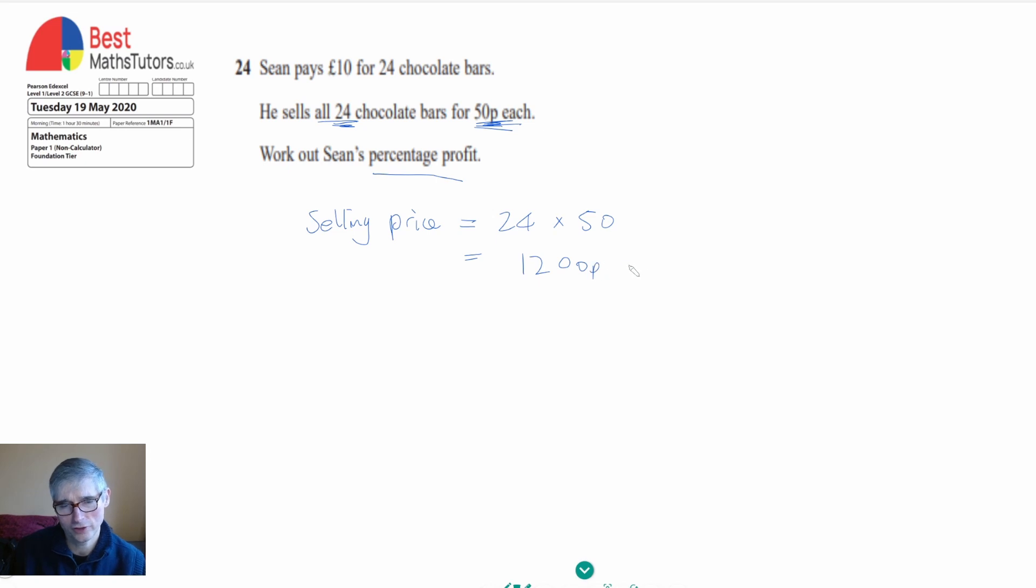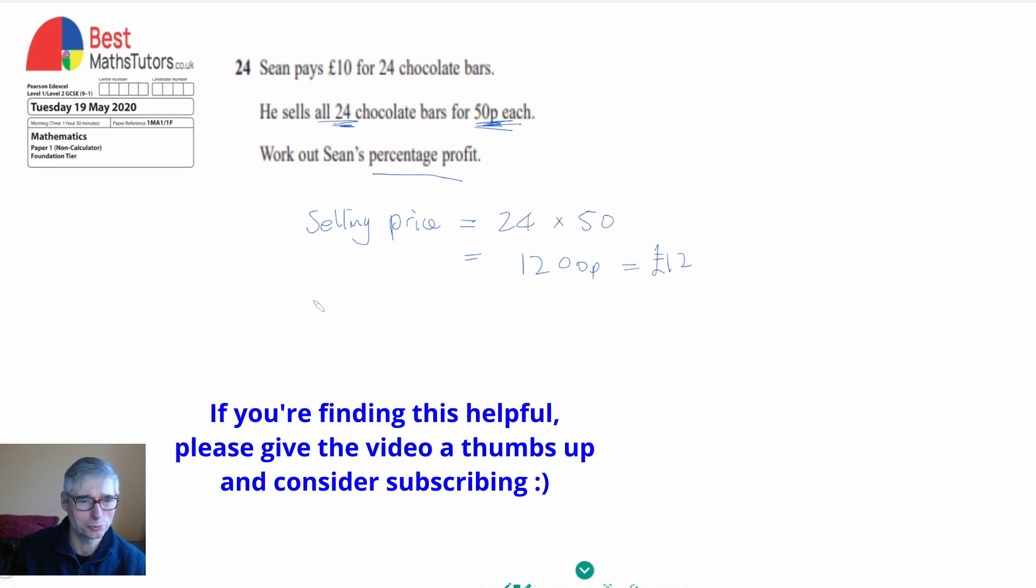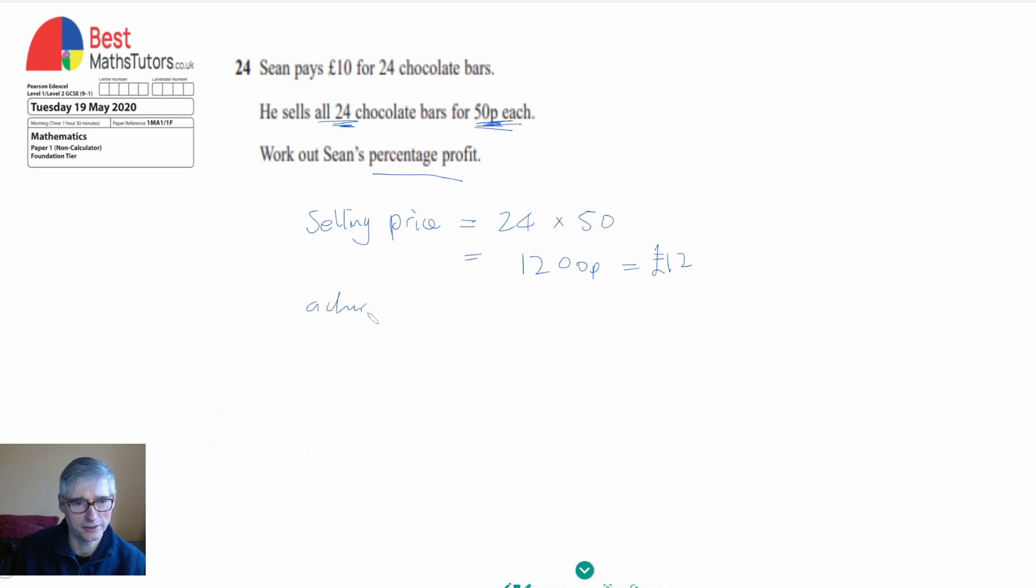1200 pence is £12. Now we need to know what the actual profit is. The actual profit is the difference between what he paid (£10) and the £12 he sold them for. So it's 12 minus 10, which is £2. That's his actual profit.